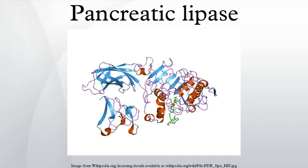Bile salts secreted from the liver and stored in the gallbladder are released into the duodenum, where they coat and emulsify large fat droplets into smaller droplets, thus increasing the overall surface area of the fat, which allows the lipase to break apart the fat more effectively.